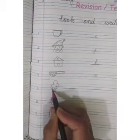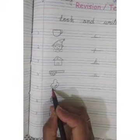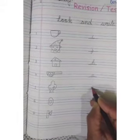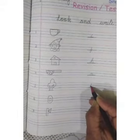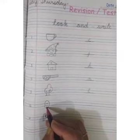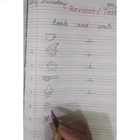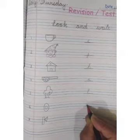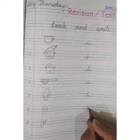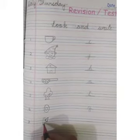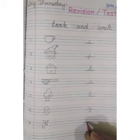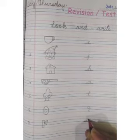Next picture is T for tree, so you will write small cursive T. Next picture is Z for zero, so you will write small cursive Z. Next picture is A for axe, so you will write small cursive A.